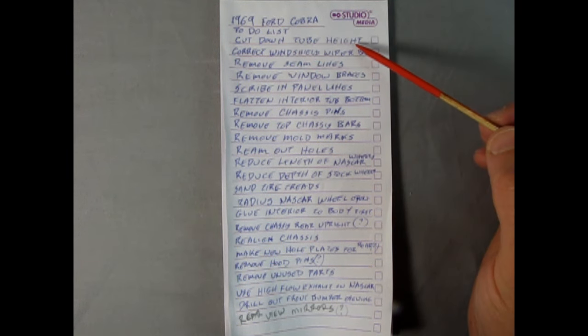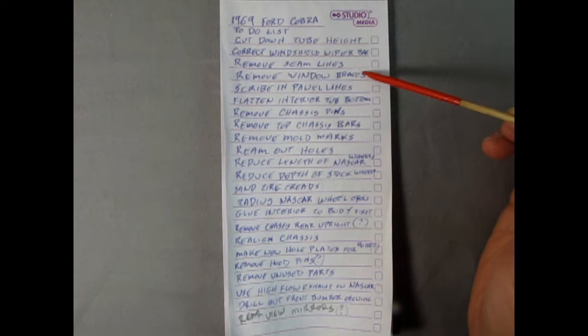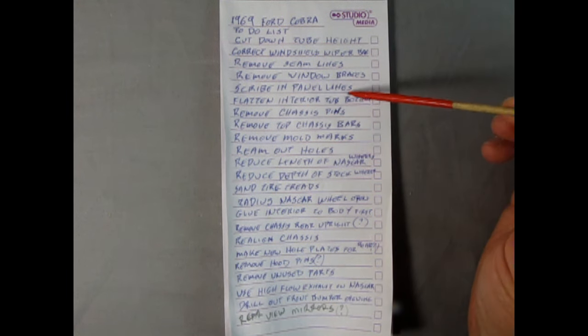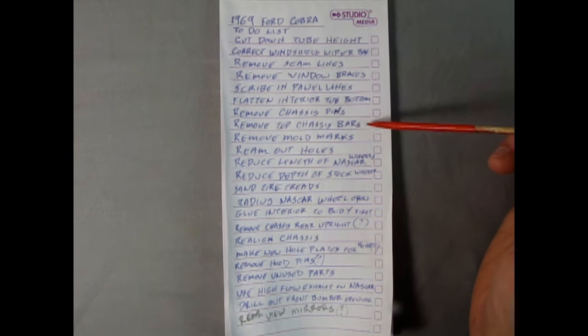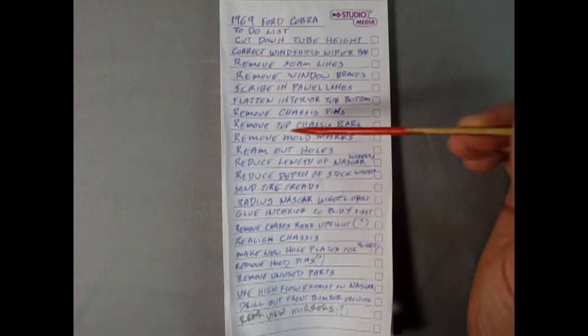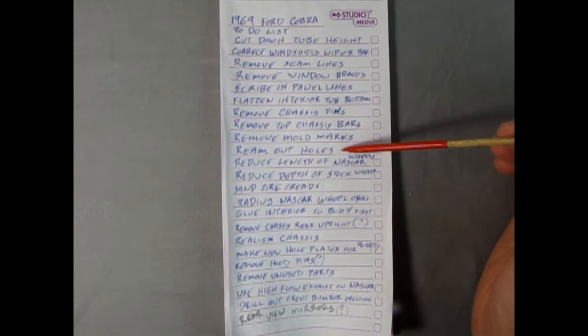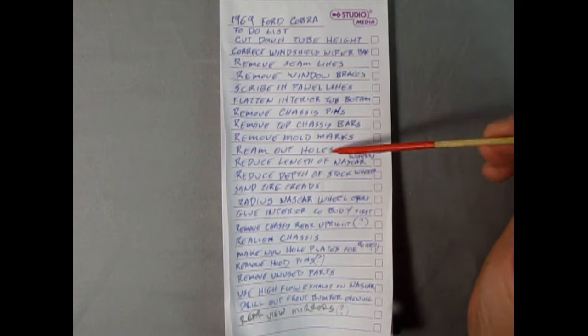The first thing I have is cut down the tube heights and then correct the windshield wiper bag. Remove the seam lines. Remove window braces. Scribe in new panel lines down the doors on the cowl and at the back of the car. Flatten the interior tub bottom. So those were the welds on there, we're going to flatten those out. Remove the chassis pins.